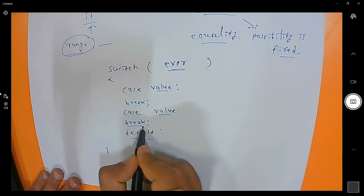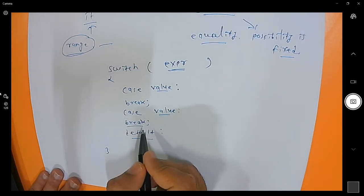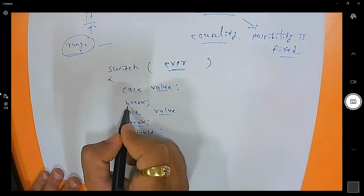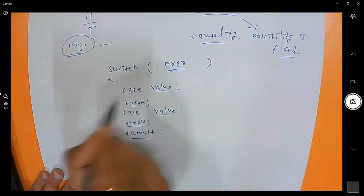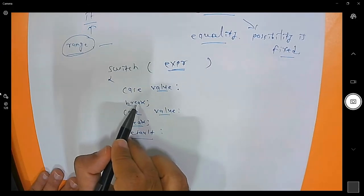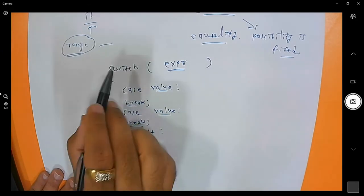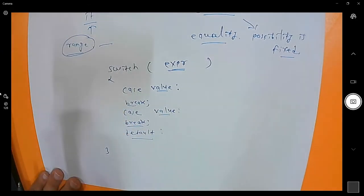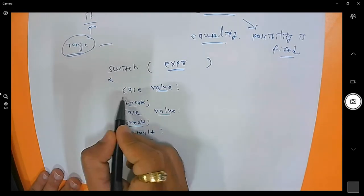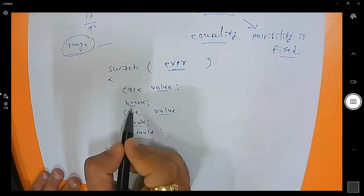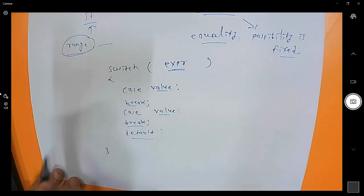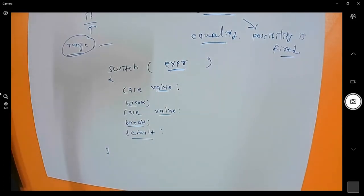The break statement is used to break from a loop as well as from a switch case. If any case is matched, it will execute that particular case and then break from the switch. Let me give an example using the earlier month program.